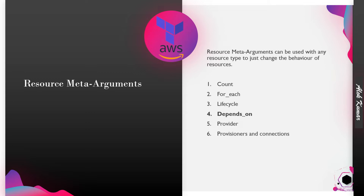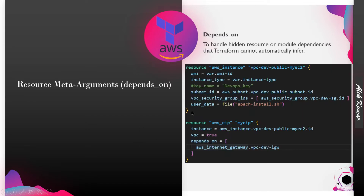So what is a meta argument? The meta argument tags with the resource and changes the behavior of the resources — meaning how the resources are created in the infrastructure. In this particular depends_on meta argument, we are going to take the example of Elastic IP. So why do we require this meta argument to change the behavior of resources?